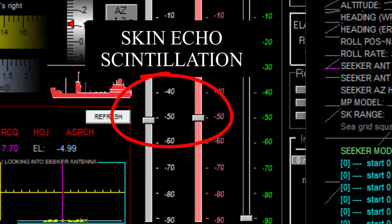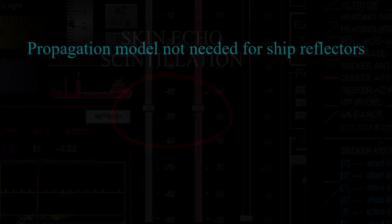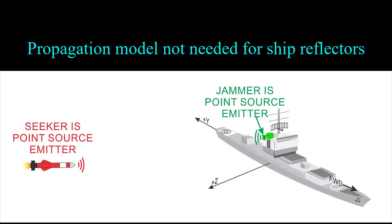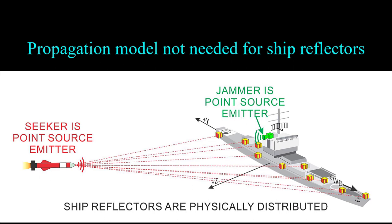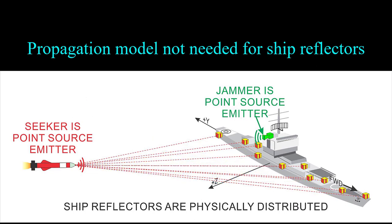This happens because the path length to each one of those reflecting points is changing and they're all different. Whereas the seeker and the jammer are effectively point sources, the ship target is a collection of reflectors distributed along the projected width and height of the ship — they're spatially distributed. The important part is that it's not necessary to apply propagation to each one of these little reflectors. Because there are so many of them — although you only need about 10 to represent a ship — the effect of propagation kind of averages out.